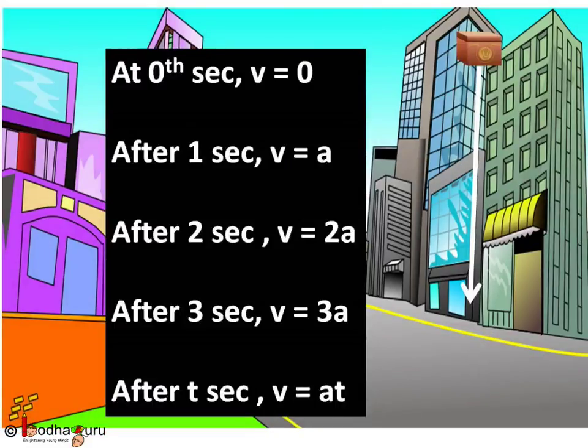So what will be the velocity of the falling box? Say its velocity increases by a every second. That is acceleration is a. So at 0th second velocity is equal to 0 because object was at rest. It was in my hand.